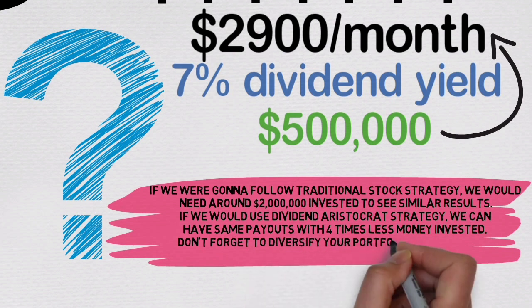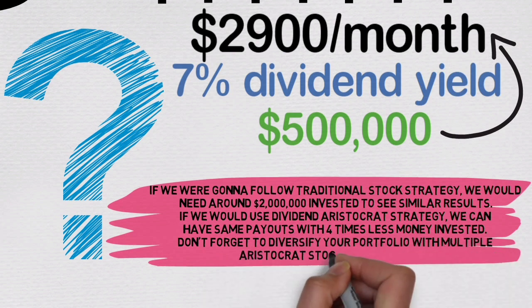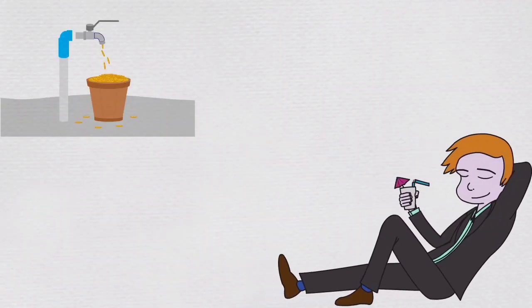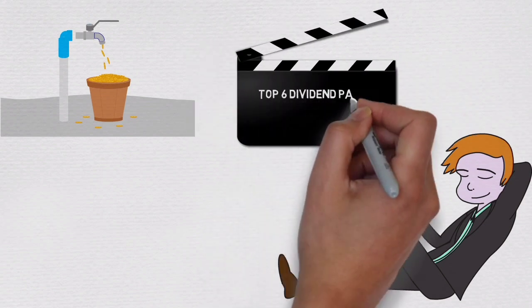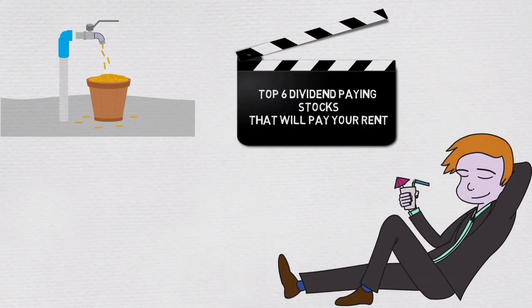Don't forget to diversify your portfolio with multiple aristocrat stocks to reduce risk. If making passive income sounds like the way you imagine your future life, watch next video about top 6 dividend paying stocks that will pay your rent. Thanks for watching.